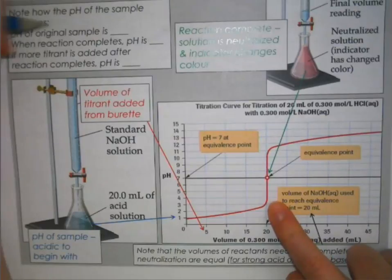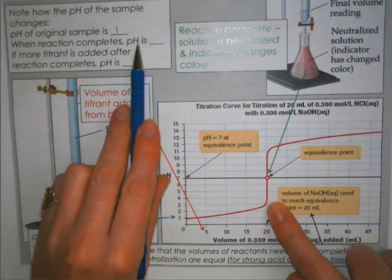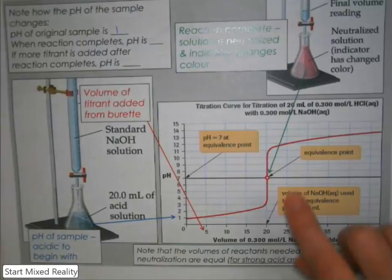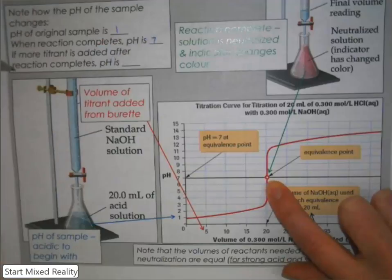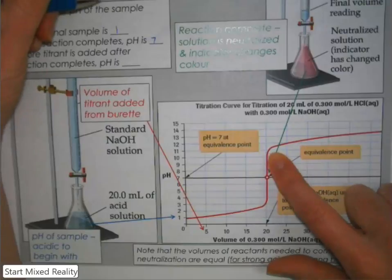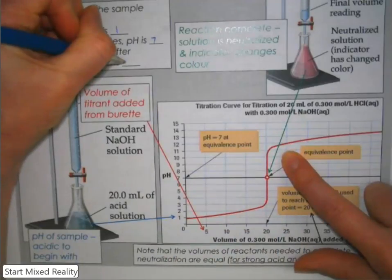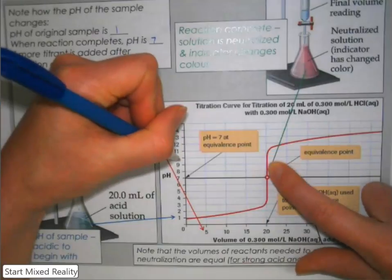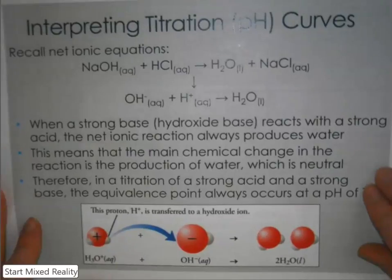You should also be able to read these graphs. The pH of the original sample is right at the beginning — maybe about 1 as a nice even number. When the reaction completes, we should see a pH of 7 because the reaction is totally complete. If more titrant is added after the reaction completes, the pH will be greater than 11, where it's starting to branch off our straight line.